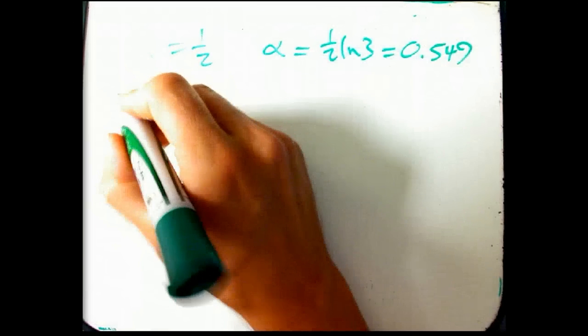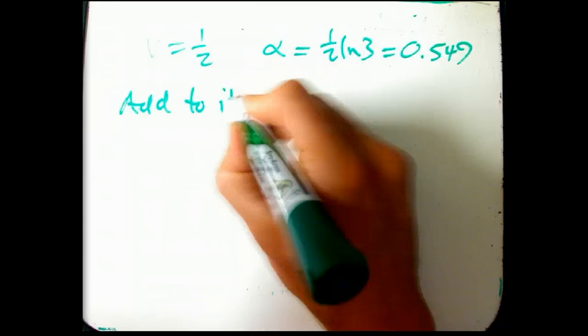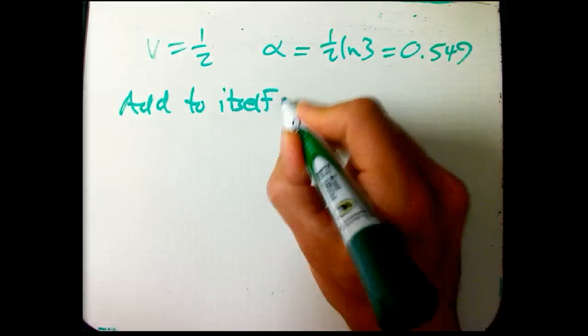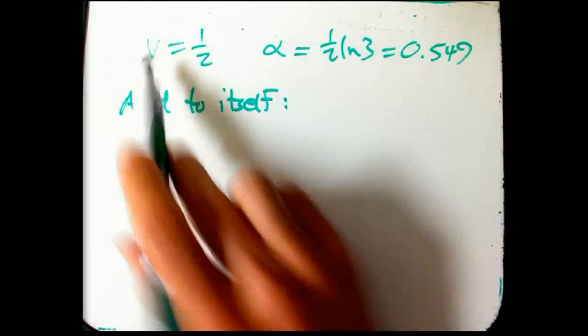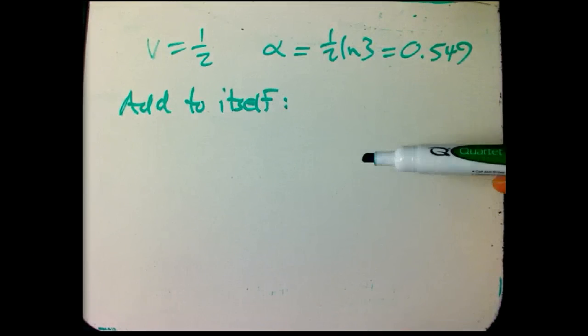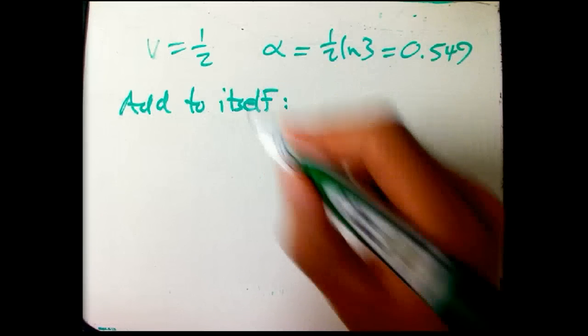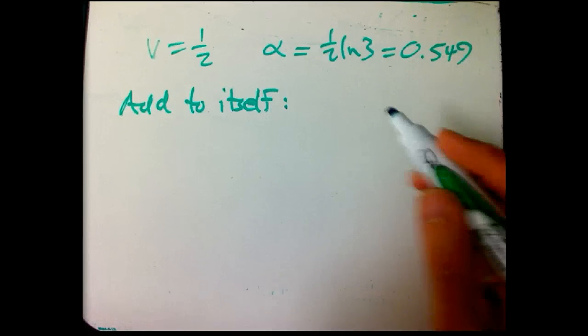Then if I add to itself this idea of the train's coming toward me at half the speed of light, and then somebody throws the baseball from that train at half the speed of light relative to the train, what's it going to end up as? What's the velocity going to end up as?